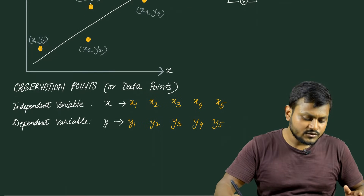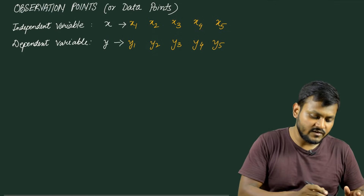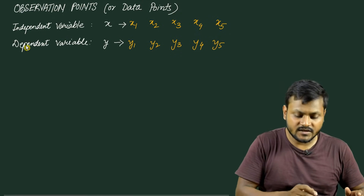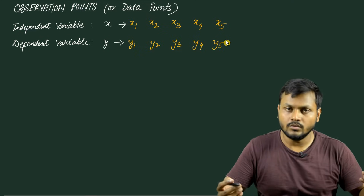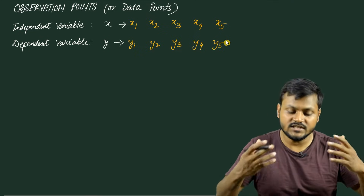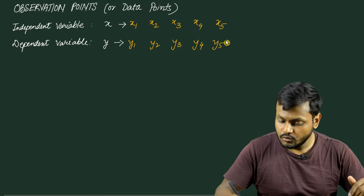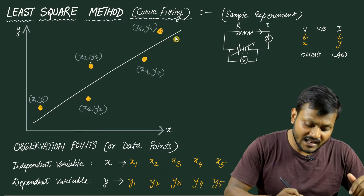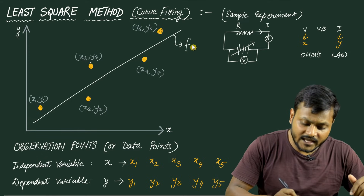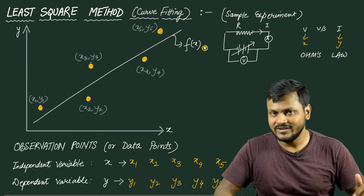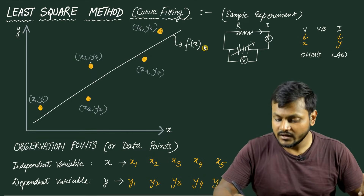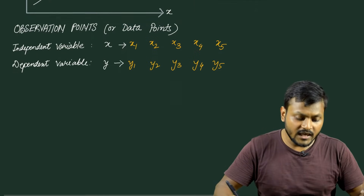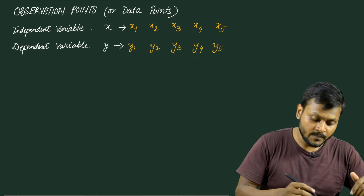Let's suppose that we have a general set of observation points, or data points, where the independent variable is x and the dependent variable is y. These data points are known. What you do not know — what you want to find out — is the line and the equation associated with this line. The line which best approximates your data points and the equation associated with it is what we are interested in.